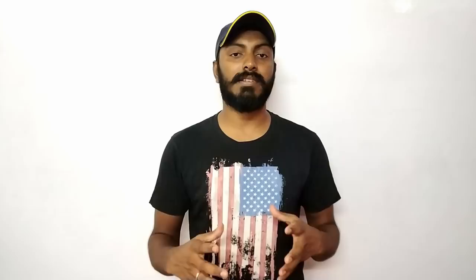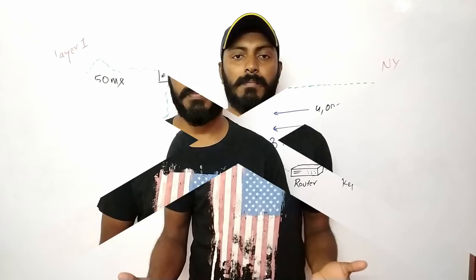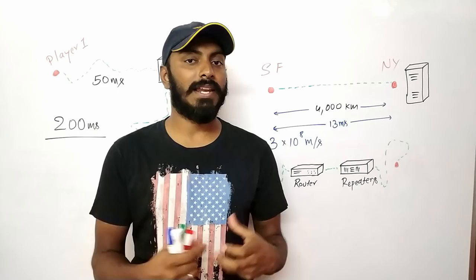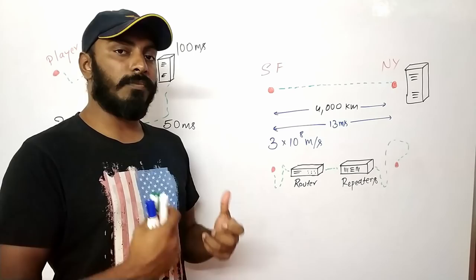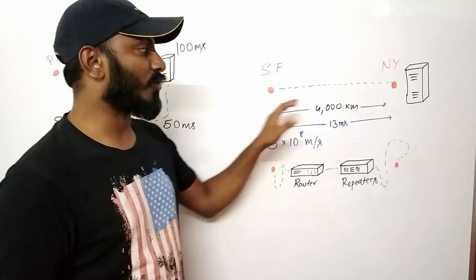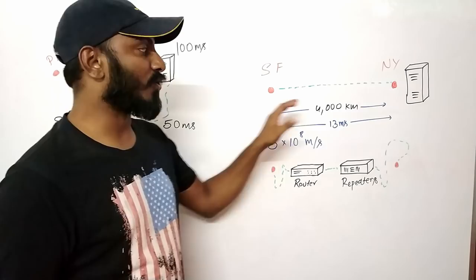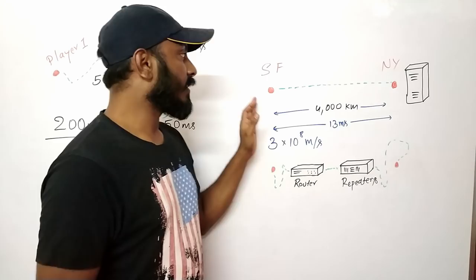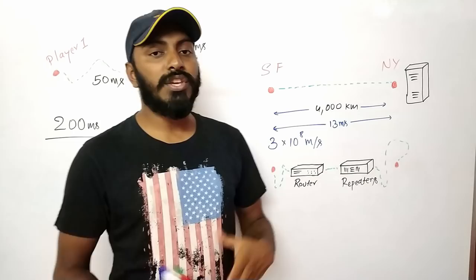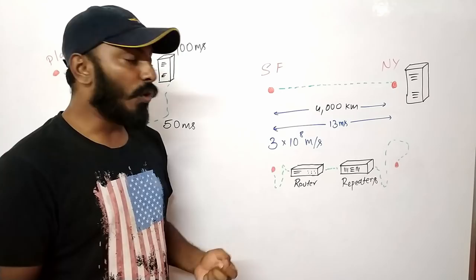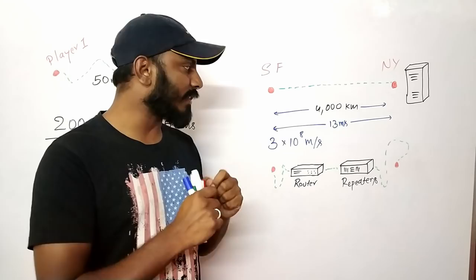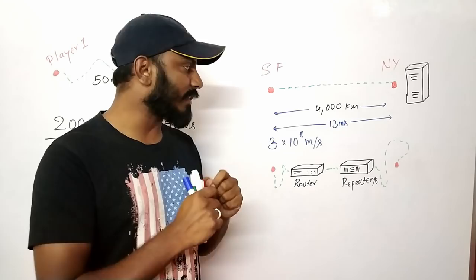Now that we understand the difficulties of first-person games — where sending messages between players must be done with minimal latency — let's understand how latency adds up in calls between players and servers. Suppose we want to send a message from San Francisco to New York, a distance of 4,000 kilometers. We use copper wires or optical fibers that work at the speed of light — 3.3 × 10^8 meters per second. Even at light speed, it takes 13 milliseconds to travel that distance, giving us an inherent latency we can't send information below 30 milliseconds round trip.